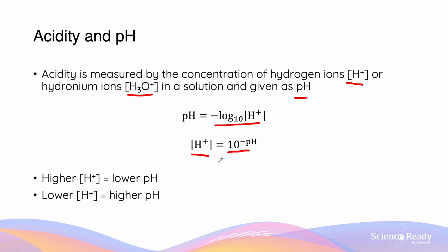Because the pH scale is the negative log base 10 of the hydrogen ion concentration, a more acidic solution with a high H+ concentration will give a lower pH. Conversely, a lower H+ concentration gives a higher pH. So a pH of 1 is more acidic than a pH of 3, for example.